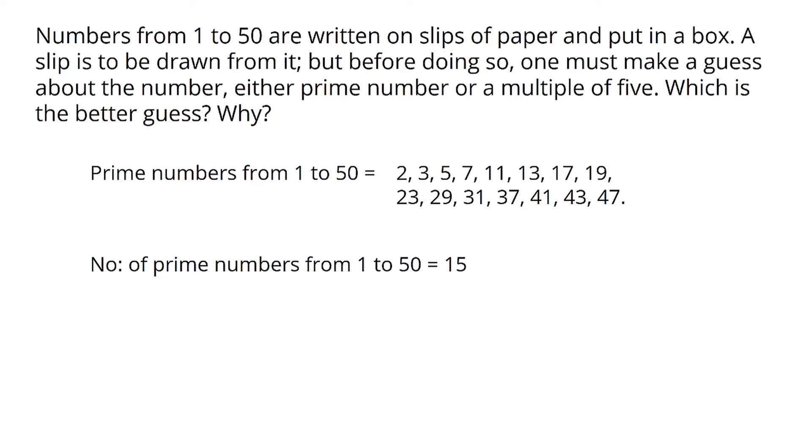What is the probability of getting prime numbers from 1 to 50? It is 15 by 50. We have to simplify this fraction. 3 by 10. So the probability of getting prime numbers from 1 to 50 is 3 by 10.